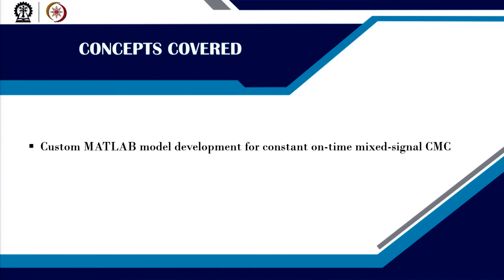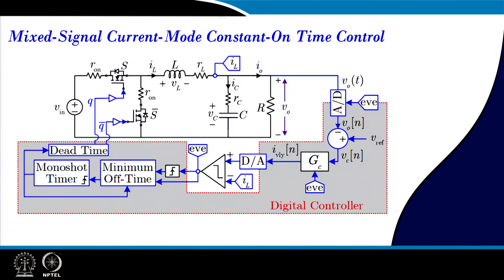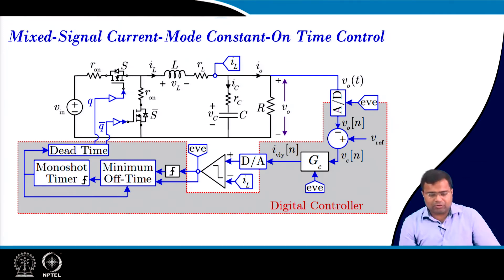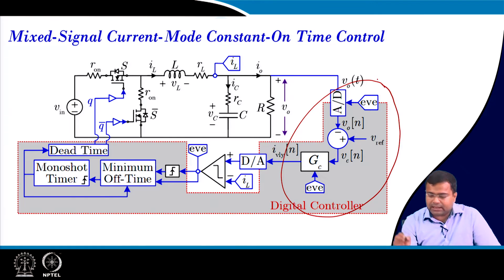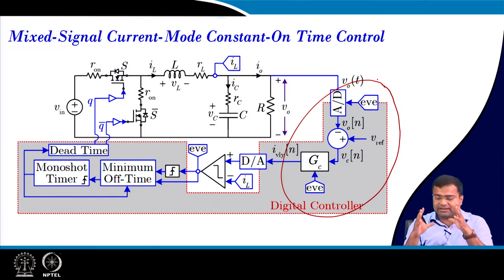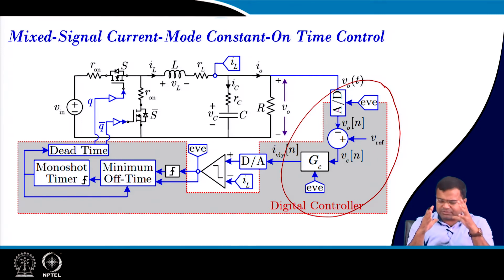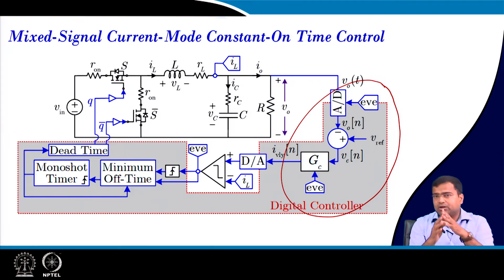We want to develop a MATLAB simulation model and consider a few case studies. First, if we talk about mixed signal constant on-time current mode control, the process is the same but the way of sampling is different. Here we will be using event-based sampling, which we have discussed. We will be using event-based sampling, not uniform sampling, because uniform sampling can lead to instability.